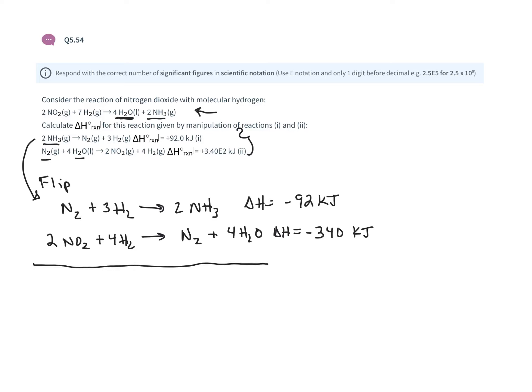Adding these two reactions together, nitrogen on opposite sides cancels out. The result is 2NO₂ + 7H₂ → 2NH₃ + 4H₂O, which is the reaction we're looking for. Adding the ΔH values gives a ΔH for this unknown reaction of approximately -432 kilojoules.